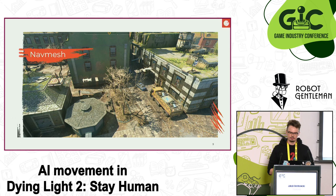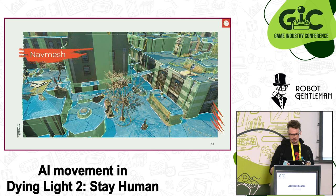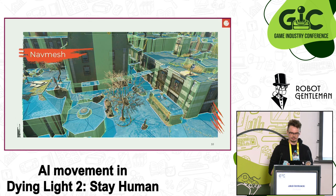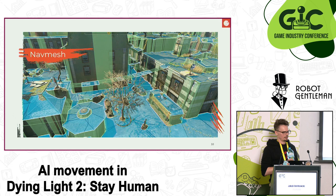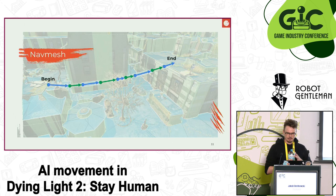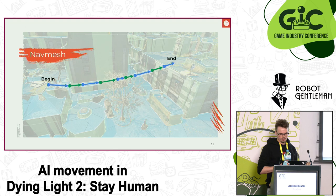Characters know where they can go thanks to the nav mesh — a simplified representation of the traversable geometry. In Dying Light 2, blue areas are walkable, where characters can move around while staying on the ground. Green wires are connections that link separate nav mesh islands and can only be traversed by dedicated jumping animations. So if you want an AI to cross from one roof to another using a makeshift bridge, the nav mesh provides a path that goes to the edge, through the connection, and to the other side.